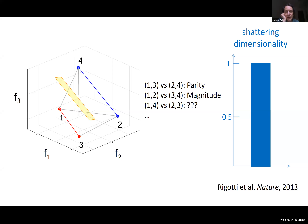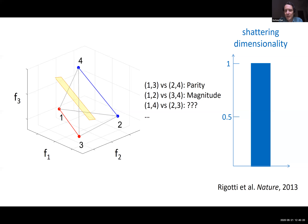We saw that the shattering dimensionality was not only maximal but also correlated with behavior: every time we observed a drop in dimensionality we could predict the monkey was going to make a mistake. So not only was this shattering dimensionality basically maximal, it seemed important for performing the task. This is not too surprising — if you want a linear readout that is simple, you need this high dimensionality.